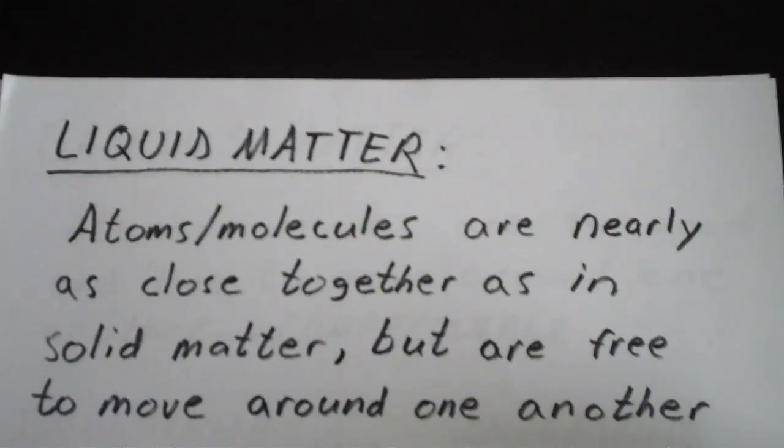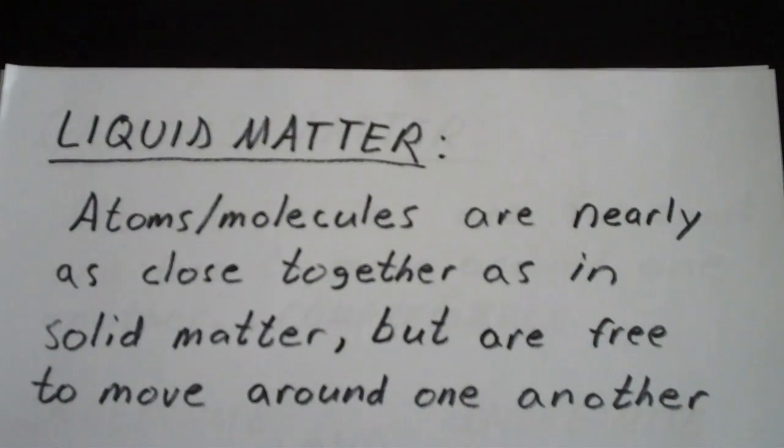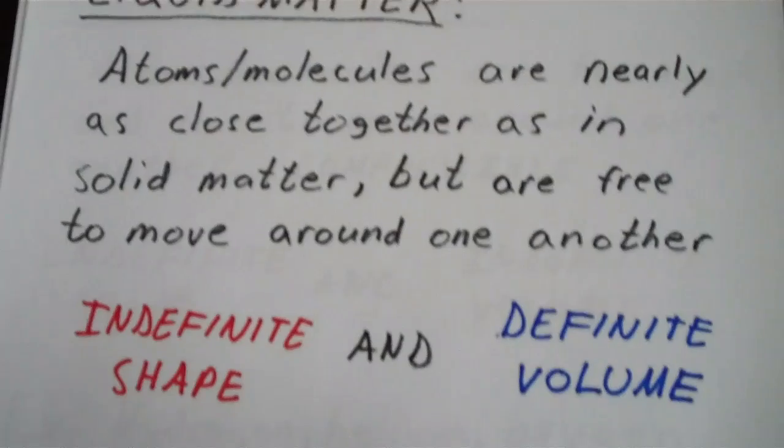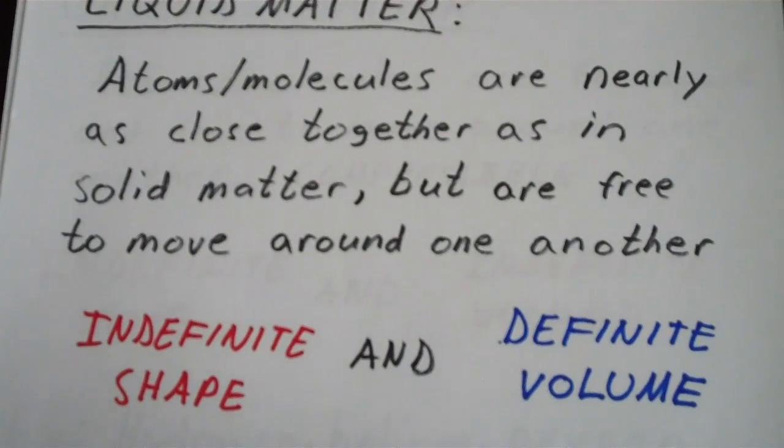Now moving on to liquid matter. In liquid matter, atoms or molecules are nearly as close together as in solids, but they're free to move around one another. Liquids basically take the shape of their container. Whatever container you pour liquid into, it'll take that shape. That means that liquids have an indefinite shape and a definite volume.